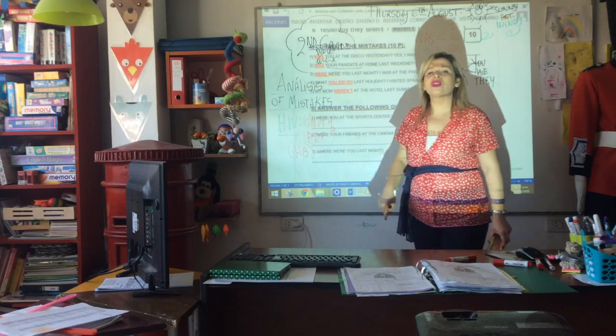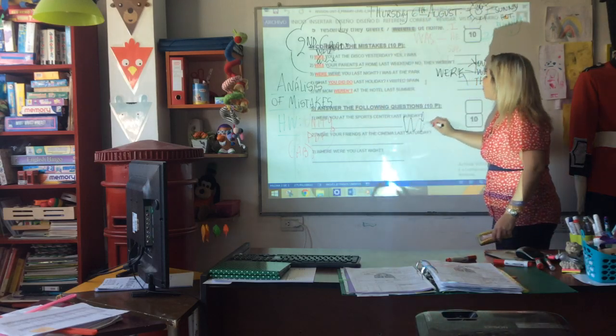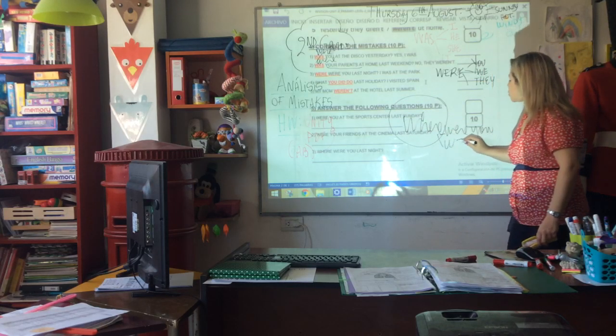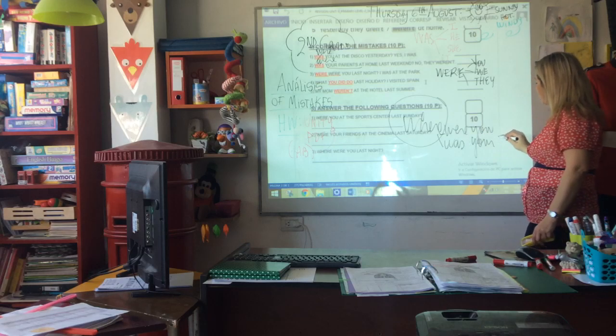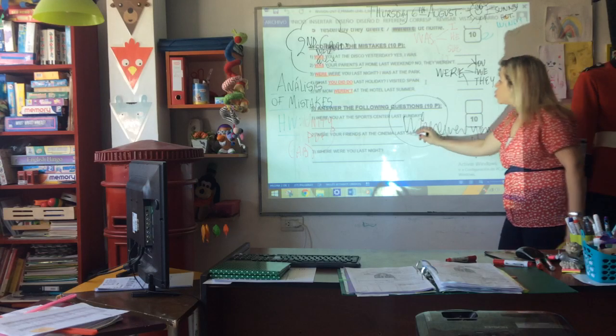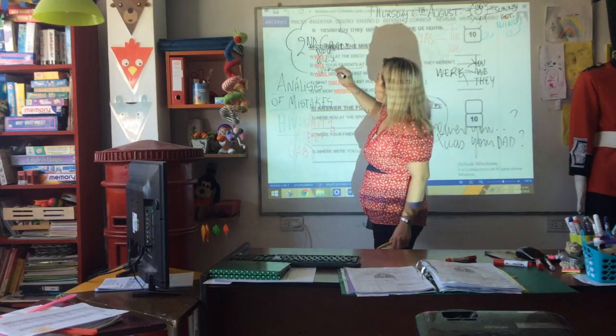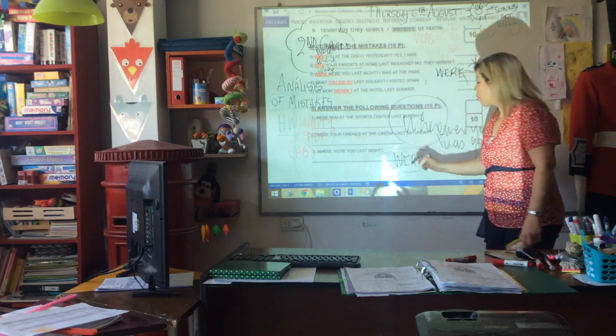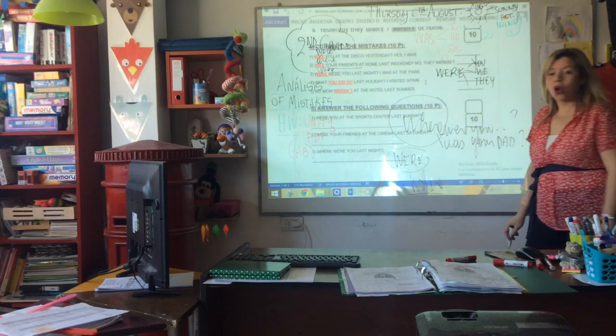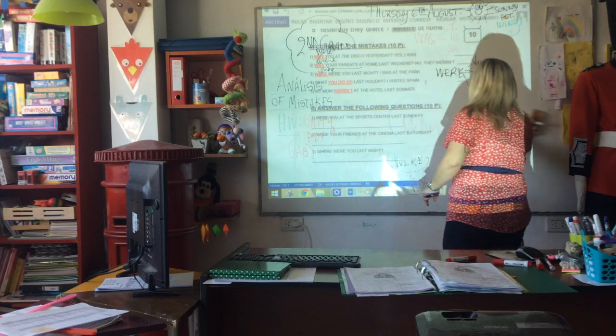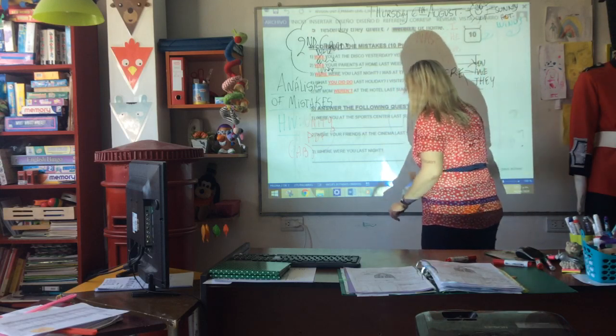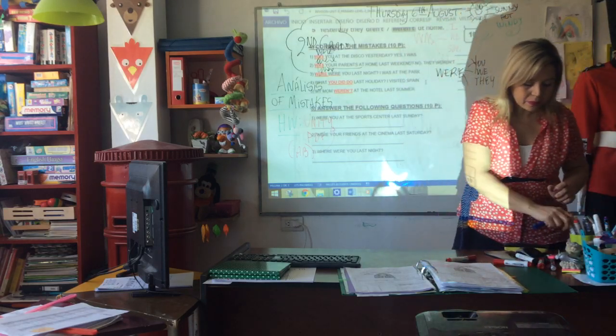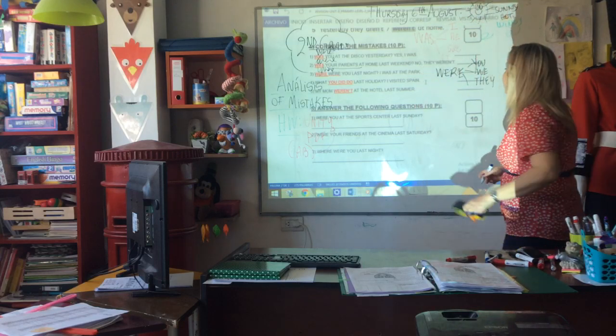Este es el error. Cómo se pregunta dónde estuviste? Where were you? Where was your mom or your dad? Dónde estuvieron? Entonces acá el error era where escribir. Muchos confundieron este de estuvieron con este de dónde. Is it clear?